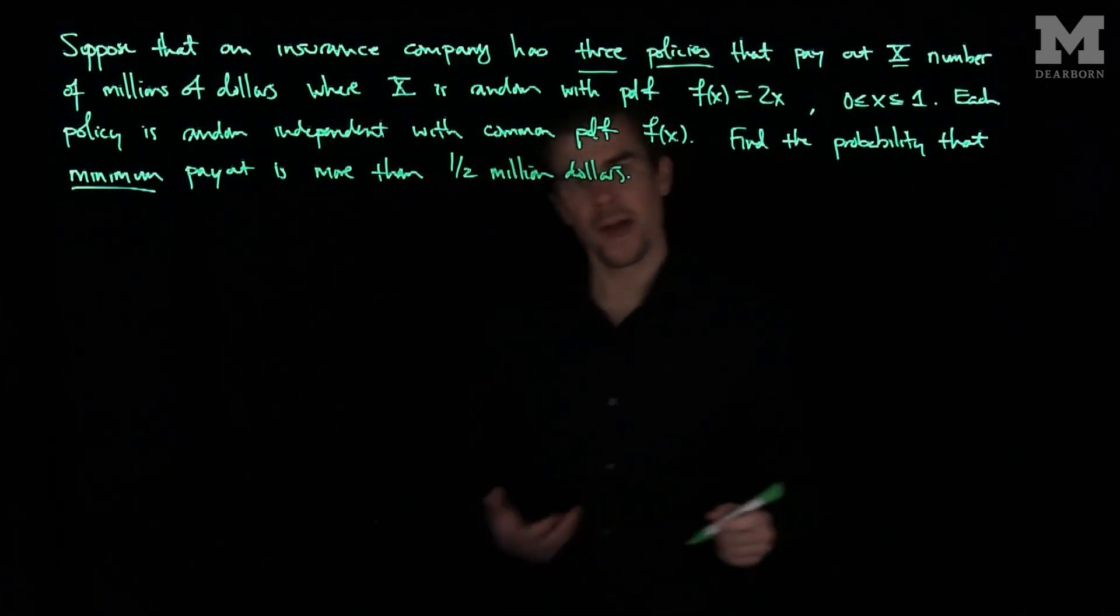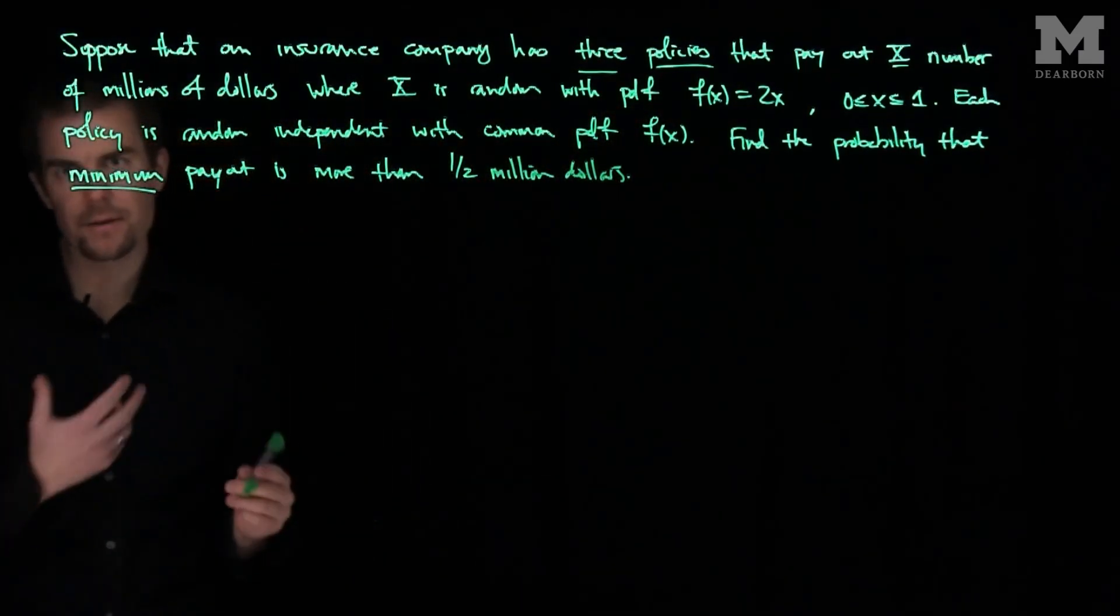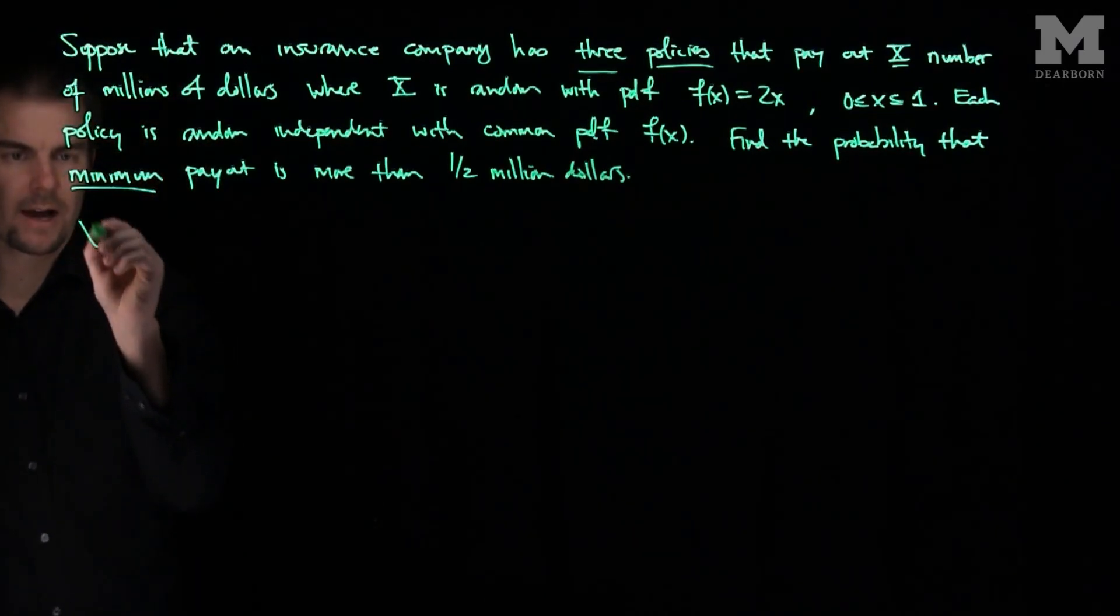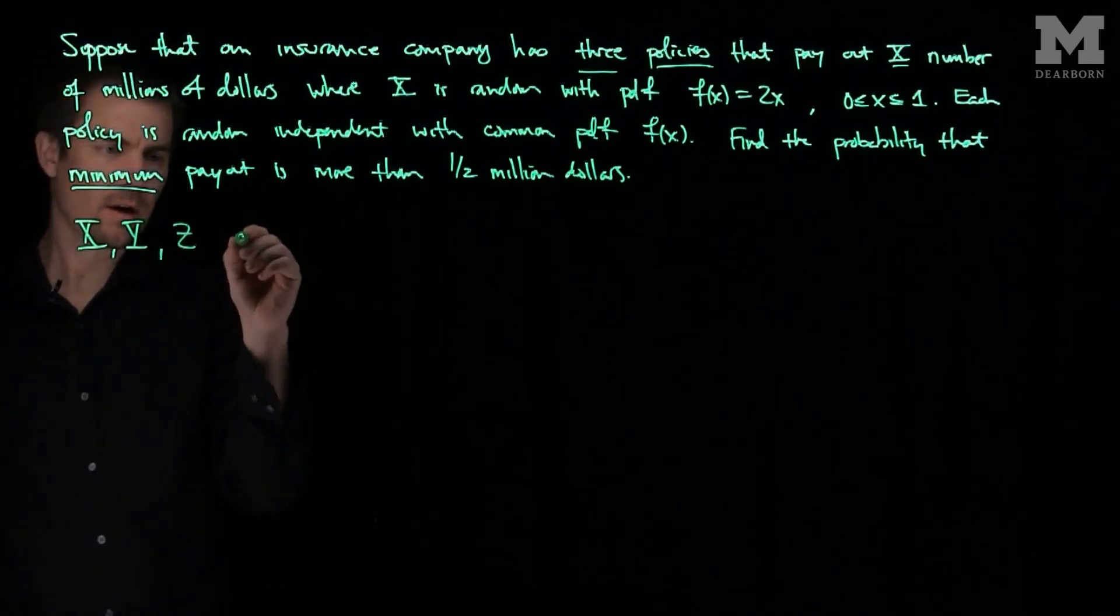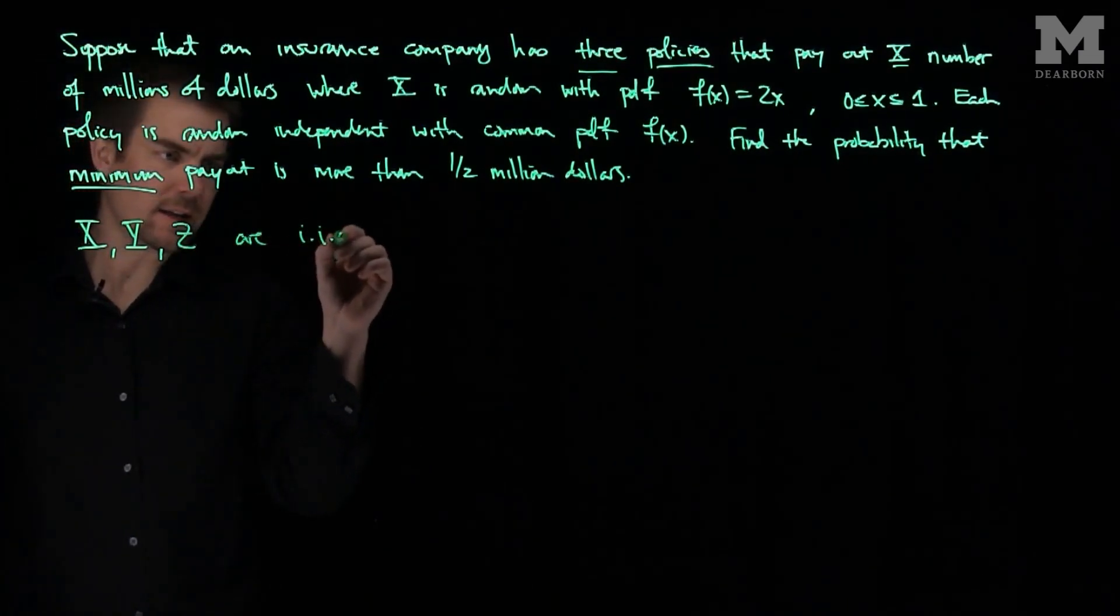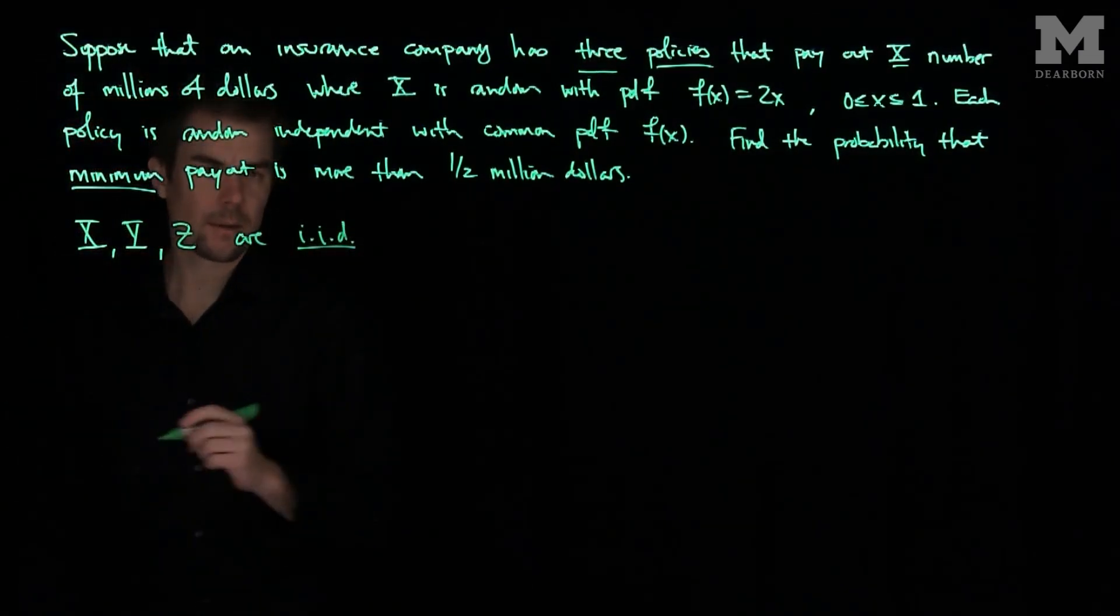So for this problem, what we have is we have three independent, identically distributed policies. We have X, Y, and Z are iid, independent, identically distributed payouts.